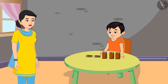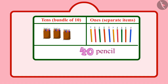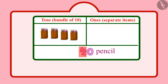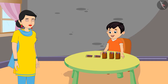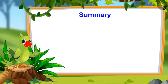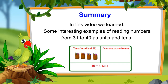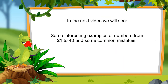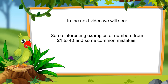Yes, Chotu, you are right. How many tenths do you have now? Mummy, 40 pencils, meaning I have 4 tenths, isn't it, mummy? And units? Mummy, there are no units in 40. Yes, Chotu, there are only 4 tenths in 40, and 0 units. That was all for today. In this video, we saw numbers from 21 to 40 and some interesting examples of reading those numbers as units and tens. In the next video, we will see some interesting examples of numbers from 21 to 40 and learn about some common mistakes which should not be done.